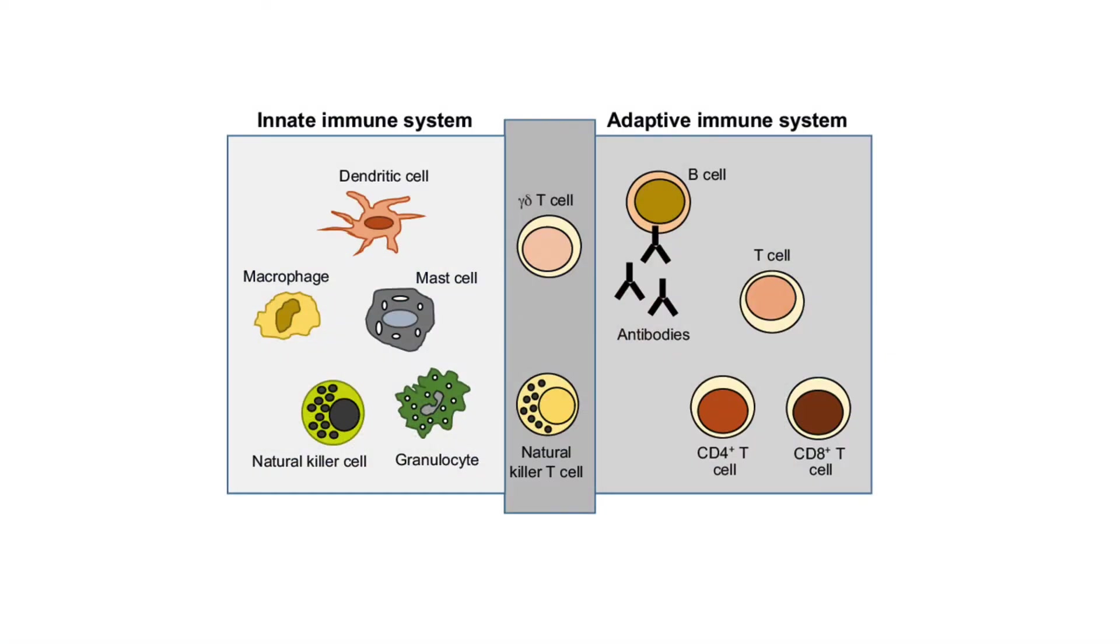But as we know, sometimes our immune system can fail and things can get by, causing us to get sick. Well, this is where our adaptive immune system would come in. So, how does our adaptive immune system work?